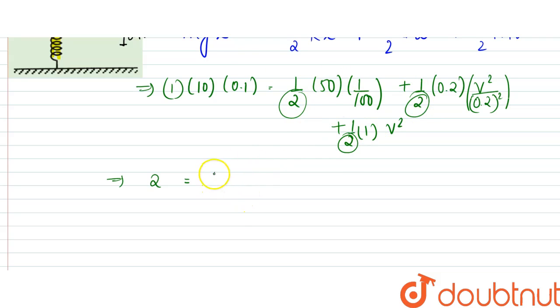That would be equal to 50 by 100, which is half, plus this and this power gets cancelled, so it would be 10 by 2, that is 5, plus 5v square plus v square.